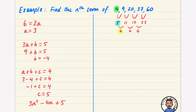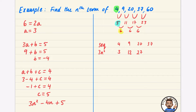Let's verify using the comparison method. Our sequence goes 4, 9, 20, 37. Because the second difference is 6, we halve that to get 3, so we compute 3n². For positions 1 through 4, that gives 3, 12, 27, and 48.